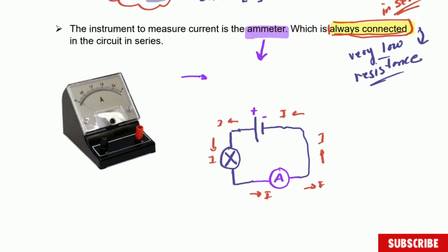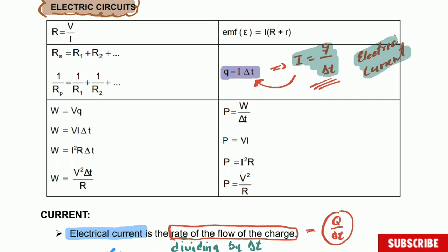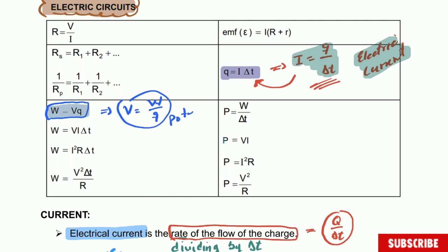If we go to the table of formulas given to you in the exams, you'll see that formula is not written in exactly that way. However, it will be in this specific form shown here. If you rearrange this formula, you get that V equals W divided by charge Q — which is the definition of potential difference. If you remember that this formula is the definition of potential difference, you can quickly rearrange it in terms of V and you'll get the definition.